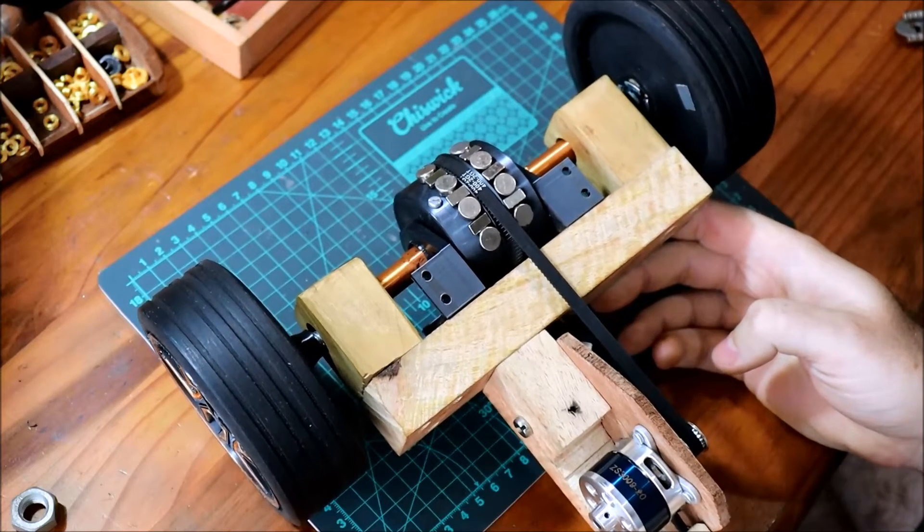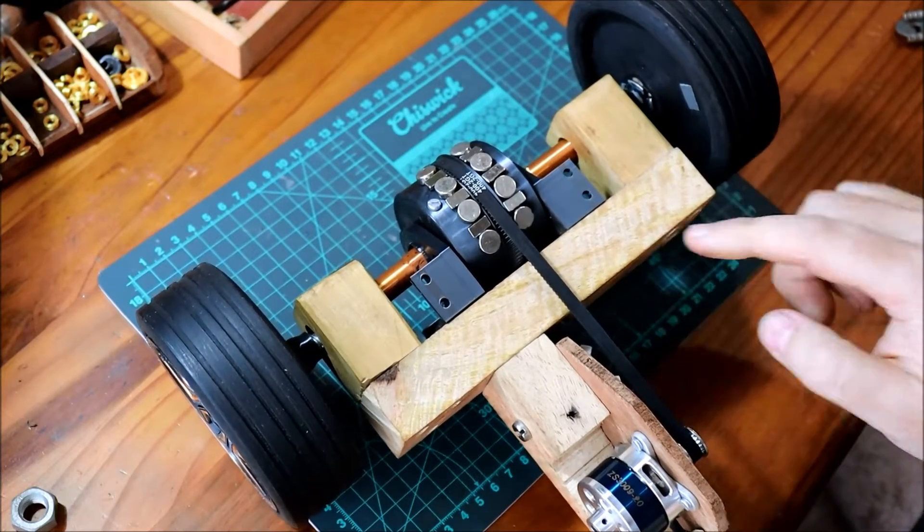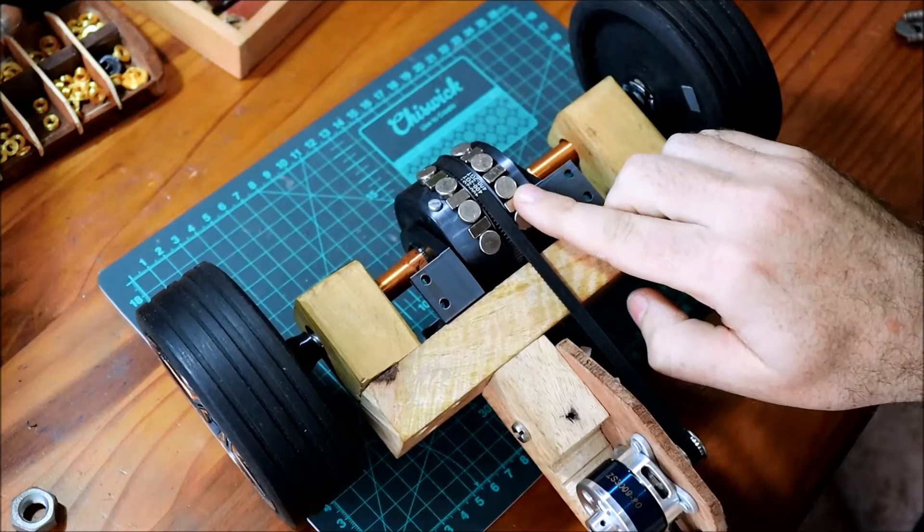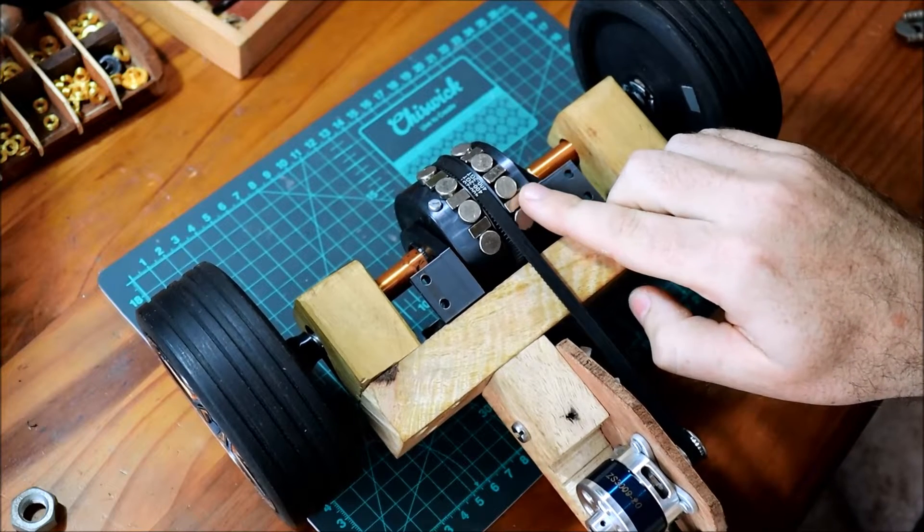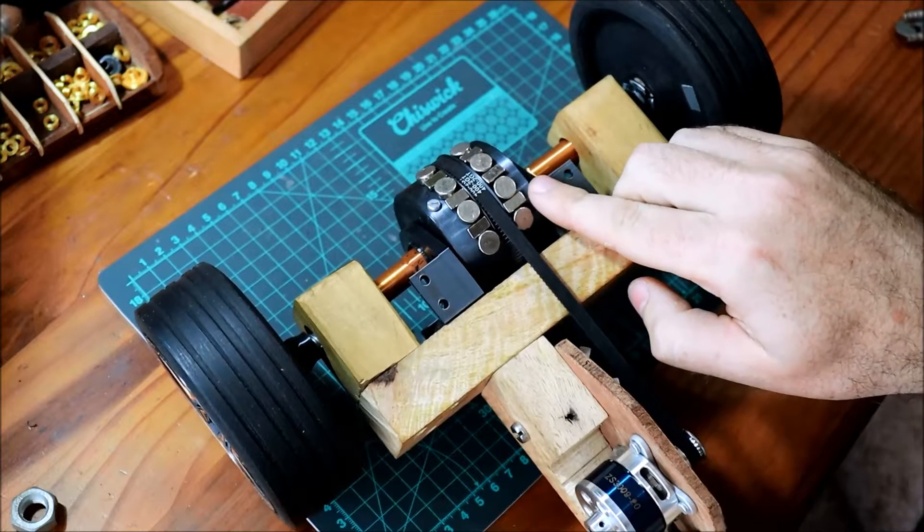But before I do that there's another interesting idea I want to share with you. If you add rings of magnets around the outside of this differential what you do is apply a braking force to the internal array.